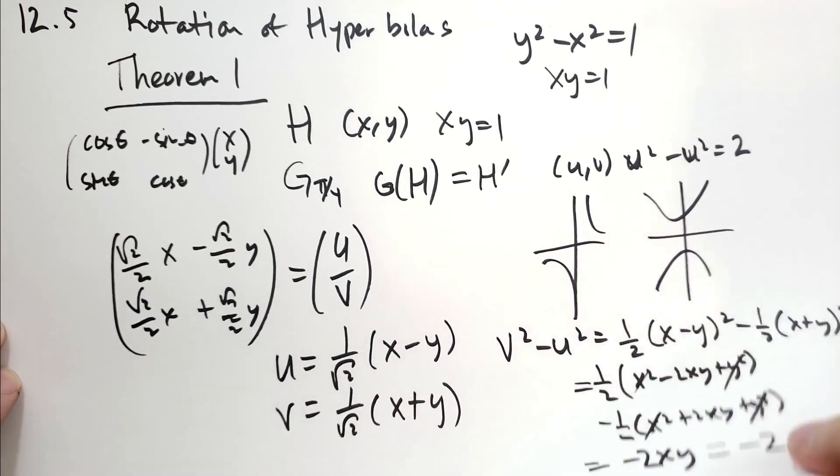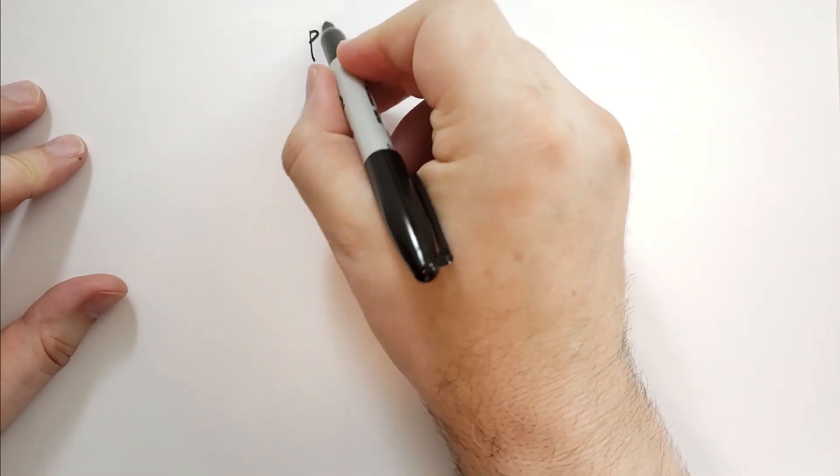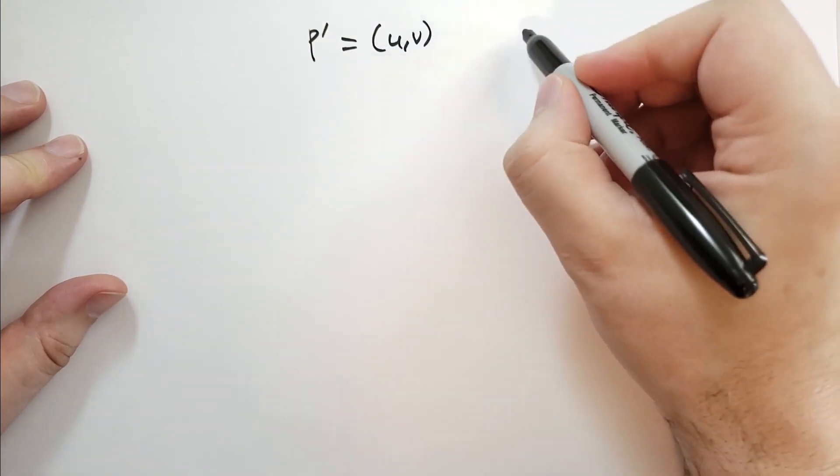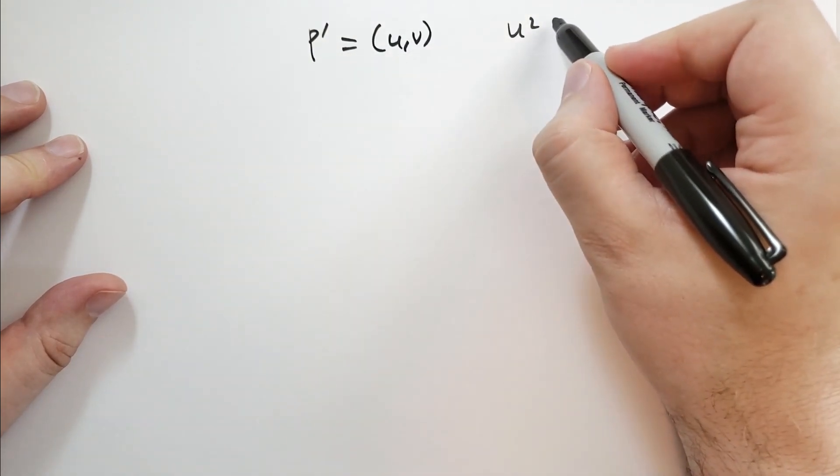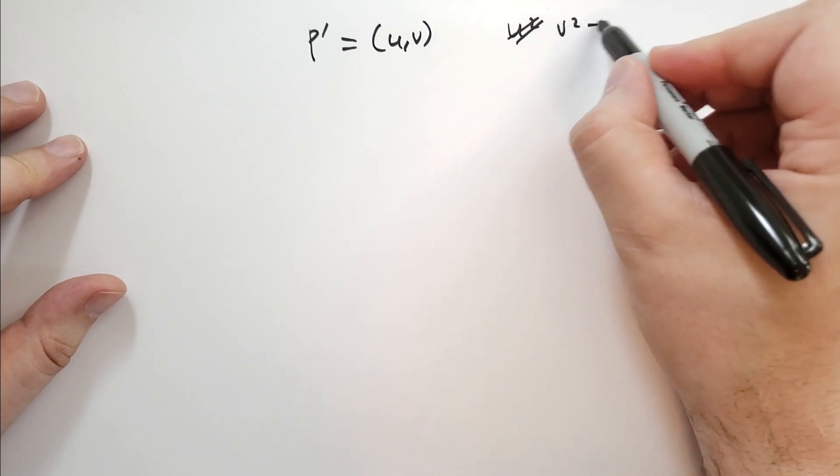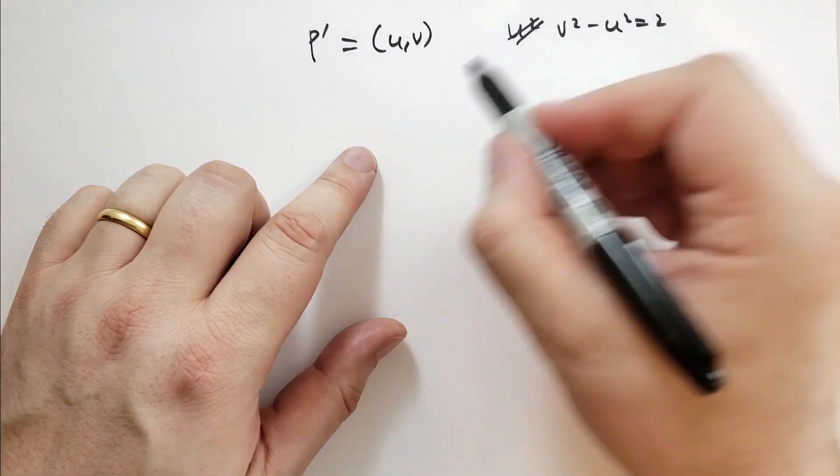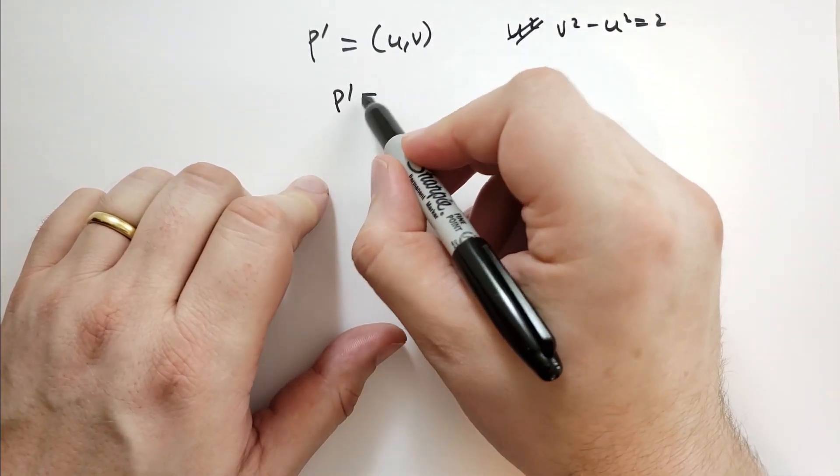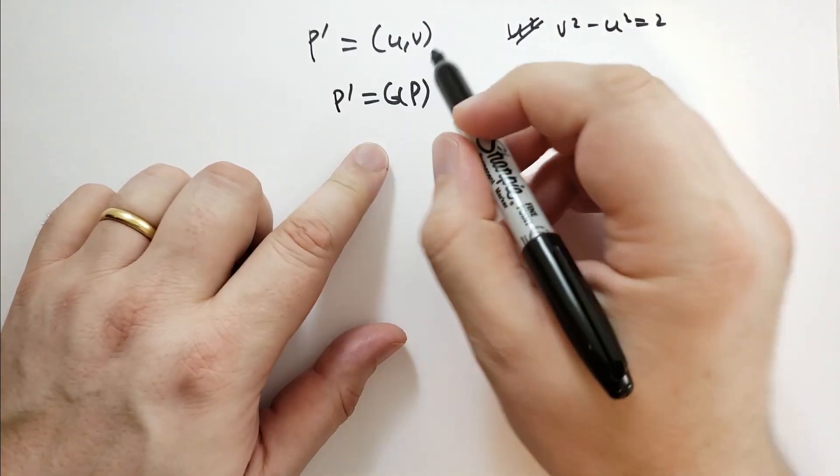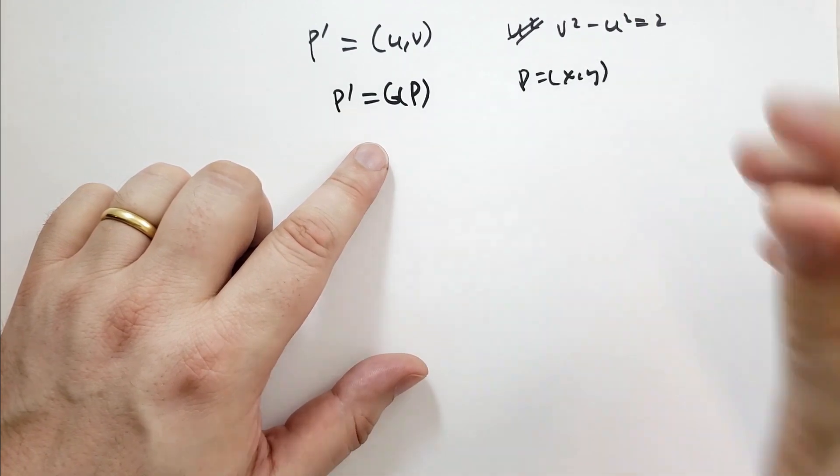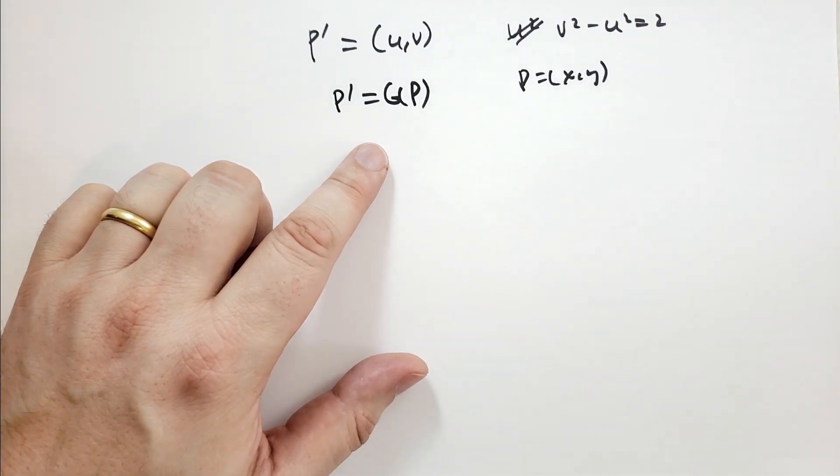Let's try going backwards. What happens if we start with xy? So we have, he says, let's let p prime is equal to a point u comma v, such that v squared minus u squared is equal to 2. And then we're going to do p prime is equal to rotation of the point p, p is equal to xy, obviously.